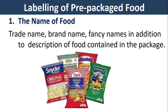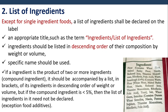Labeling of prepackaged food: The name of food includes trade name, brand name, and fancy names in addition to description of the food. For the list of ingredients, except for single ingredient foods, a list of ingredients shall be declared on the label under an appropriate title such as 'Ingredients' or 'List of Ingredients'. Ingredients should be listed in descending order of their composition by weight or volume. If an ingredient is the product of two or more ingredients, that is known as a compound ingredient, it should be accompanied by a list in brackets.